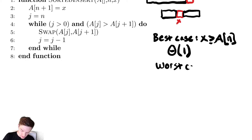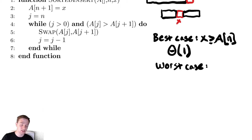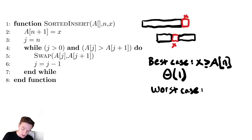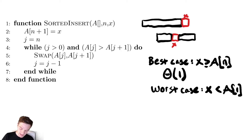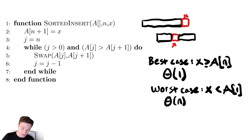The worst case runtime would be that we need to swap element x all the way over to the start — we need to iterate over the entire array. This would be the case when x is less than a[1]. If that's the case we would need to iterate over the entirety of a, so it would be Θ(n).